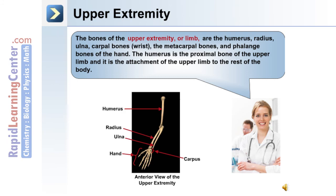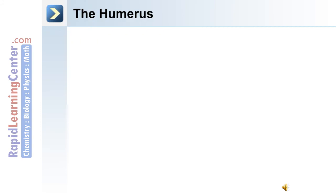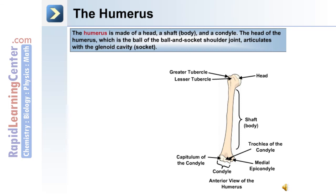The humerus is the proximal bone of the upper limb and is the attachment of the upper limb to the rest of the body. This anterior view depicts the humerus. At the proximal end is the head, which articulates with the scapula. There is also a greater and lesser tubercle. At the distal end of the humerus is the condyle, made up of two portions: the capitulum and the trochlea.